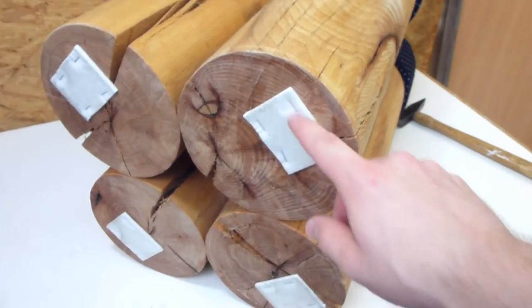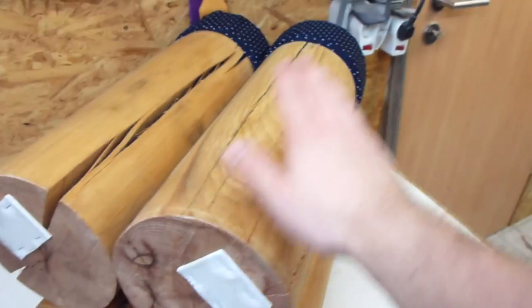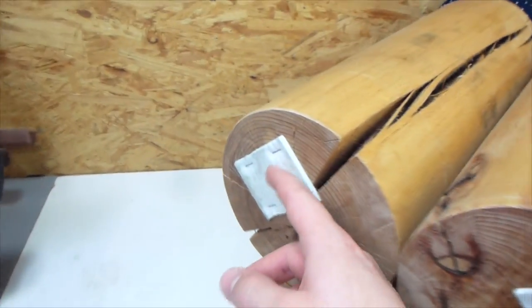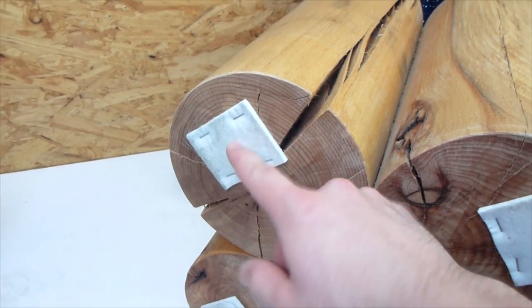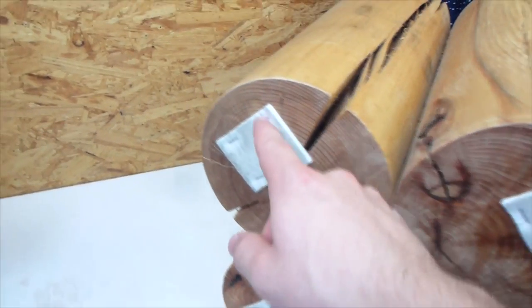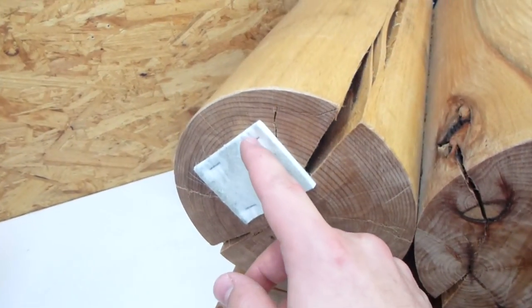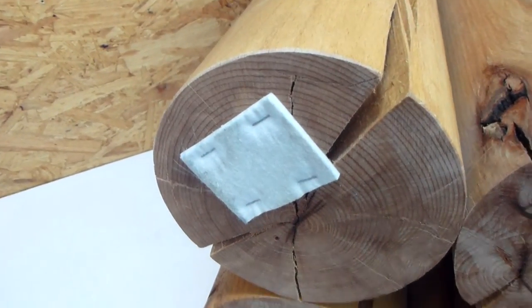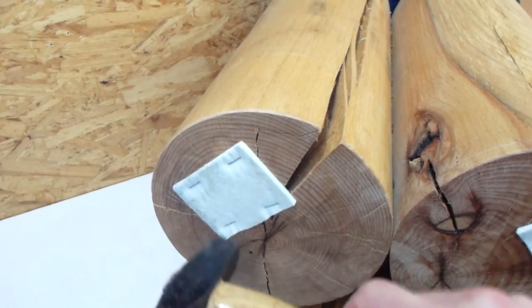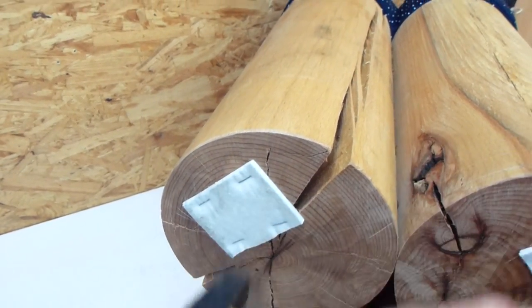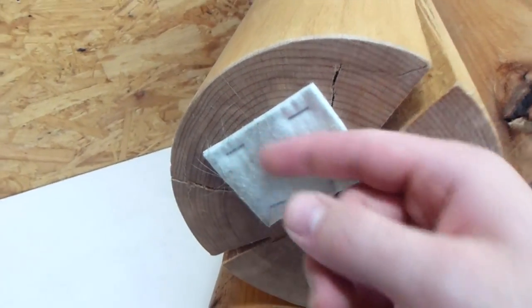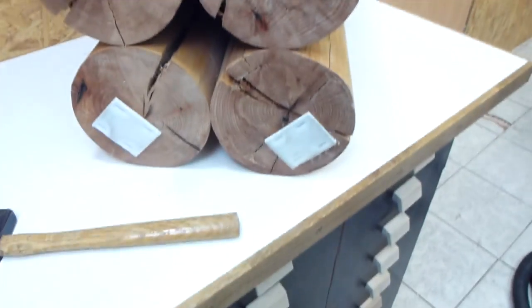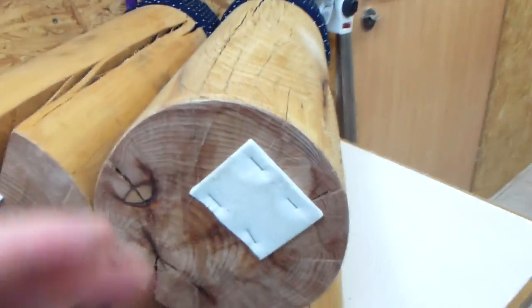First of all, I wanted to make a quick follow-up to my last project, this stool, because a lot of you commented that the staples with which I attached these felt pads so the stool doesn't scratch the floor, you said that the staples might scratch the floor. But what you don't know, because I didn't show it in the video, is that after I applied the staples I hammered them in as far as they would go into the wood. So now they are far below the surface of the felt pads and that's why they are not scratching the floor.